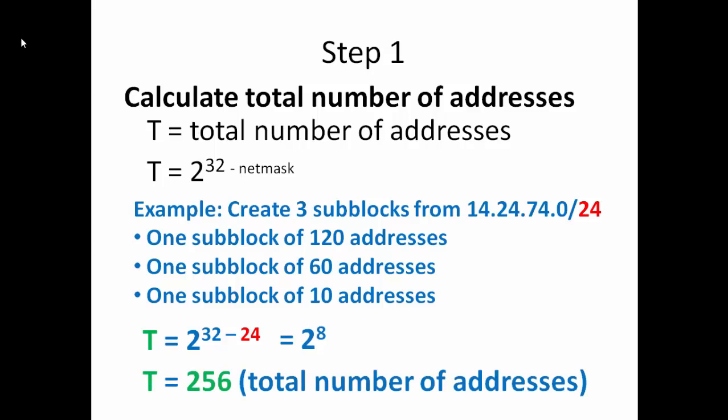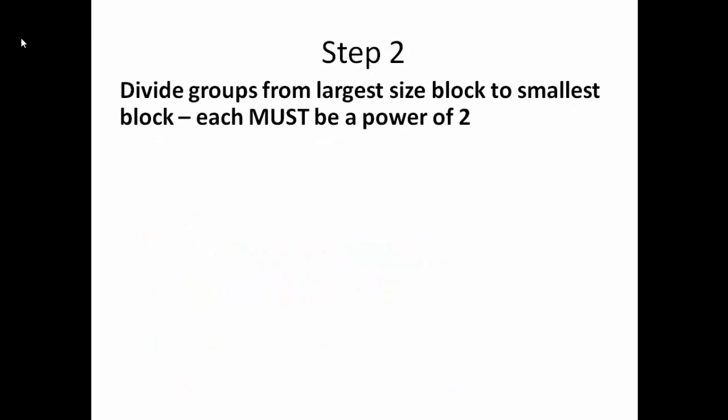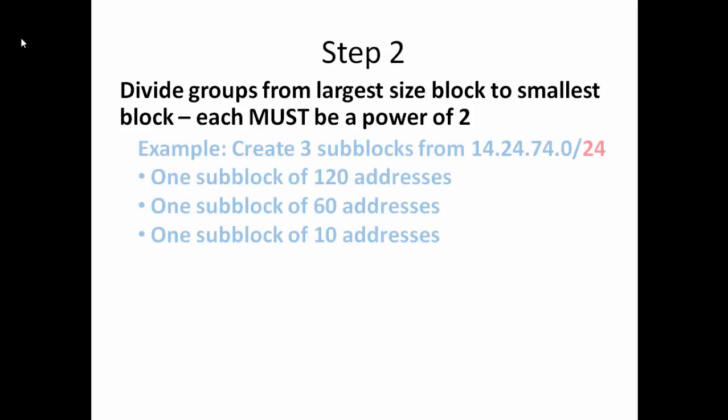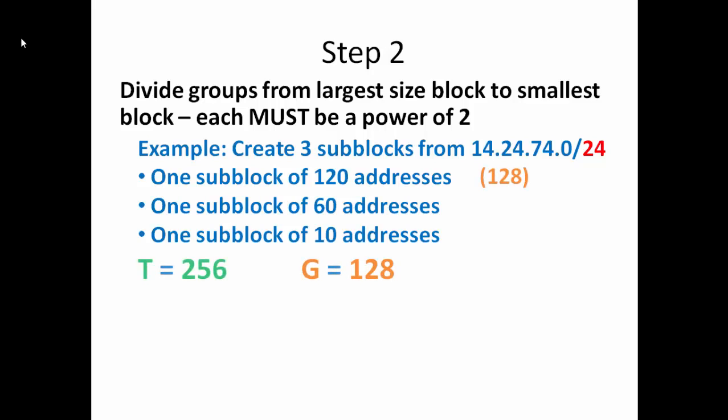Which is 2 to the 8th for a grand total of 256 addresses. In our second step, we change things up a bit. We now divide the groups from the largest size block to the smallest. That means we'll start with 120 since that was the largest block of the group of addresses that we had. The trick is that each block has to be a power of 2. So we will create our first subblock of 120 addresses, but 120 is not a power of 2. So we'll go up one and we'll say the closest power of 2 that we have is 128. Now this is a little bit different. We want it to be larger than the total number of addresses that is requested. We don't want to short anybody addresses. We want to make sure that they have enough. It still has to be a power of 2. So we'll give them 128 addresses.